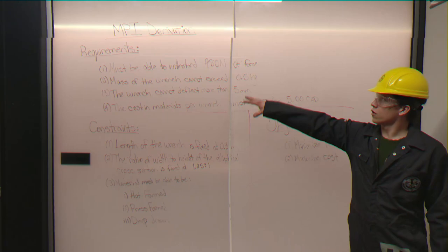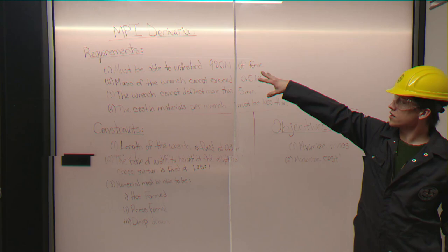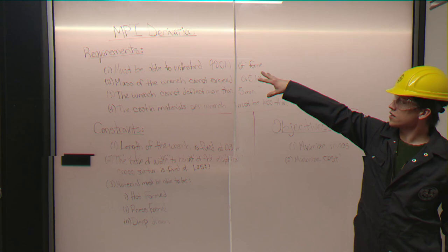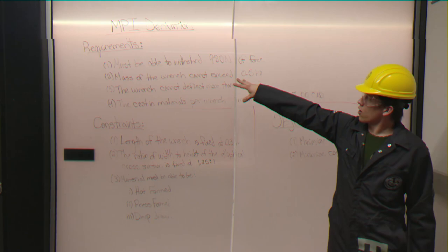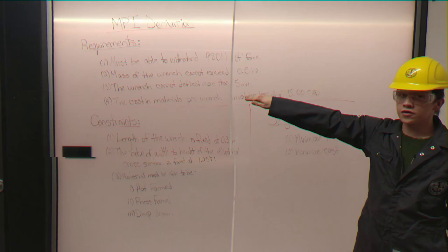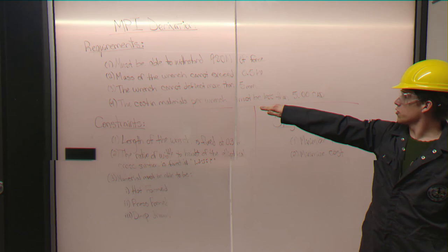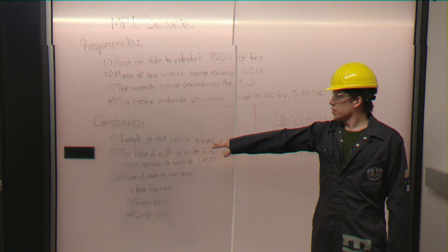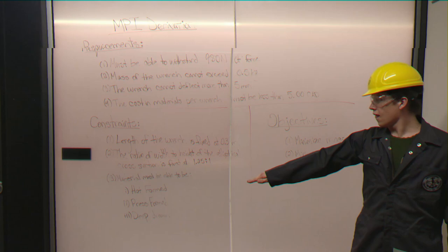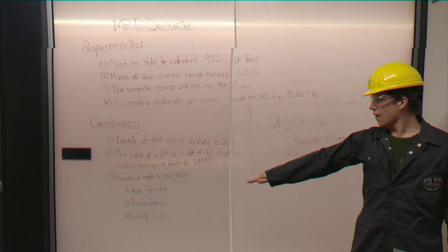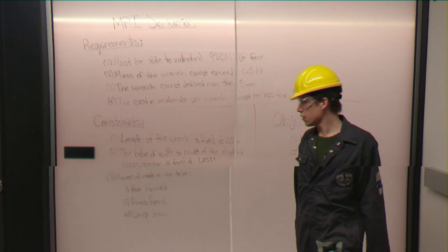From here, we're going to be deriving the material property index from our criteria previously discussed that's been separated into requirements, constraints, and objectives. Our requirements are that the material must be able to withstand 980 newtons of force, the mass cannot exceed 0.5 kilograms, nor can it deflect more than 5 millimeters. And the cost in materials per wrench must be less than 5 Canadian dollars. The wrench has been constrained to be the length is fixed at 0.3 meters, the ratio of width to height of the cross section ellipses is fixed at 1.25 to 1, and the material must be able to be hot formed, pressed formed, and deep drawn. And we've identified our two objectives to be minimizing mass and minimizing cost.